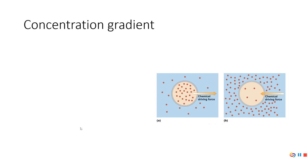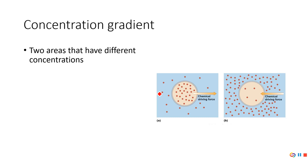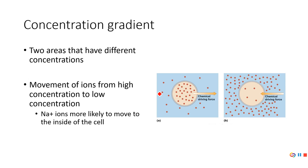There are a couple of different kinds of gradients when it comes to these ions. A concentration gradient refers to how much of an ion or substance is on one side of the membrane compared to the other. With all gradients, things move from high to low. So sodium goes from high concentration to low concentration — if the cell membrane becomes more permeable, a lot of sodium will go inside the cell.